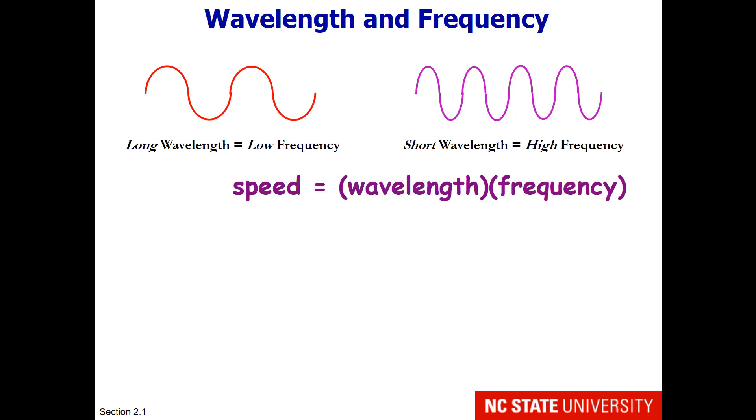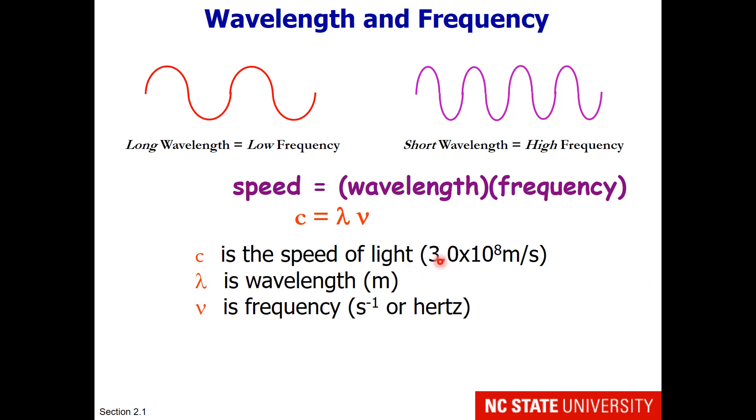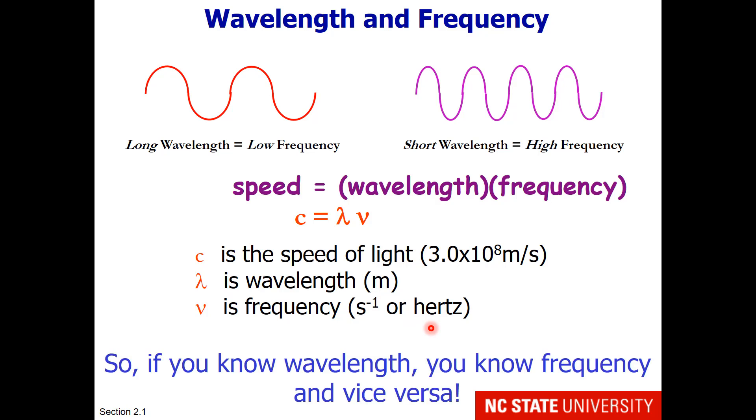Now it turns out that the speed of light is actually equal to the wavelength multiplied by the frequency. So we represent the speed of light as c and that in a vacuum is 3.0 times 10 to the 8th meters per second. Lambda is, of course, the wavelength and this is in units of meters. Nu is the frequency and this is going to be in units of per second or hertz. So if you know the wavelength, you know the frequency and vice versa, given that the speed of light is this set constant. So even in the math you can see that wavelength and frequency are multiplied by one another and that makes those inversely proportional. A long wavelength will give you a low frequency. A short wavelength will give you a high frequency.